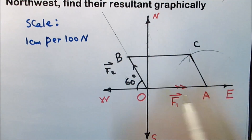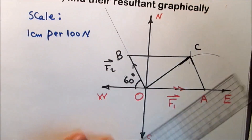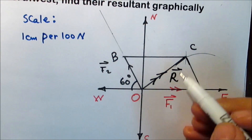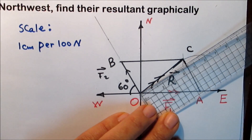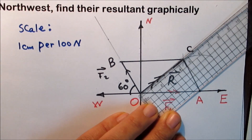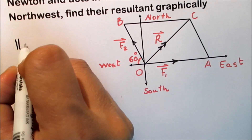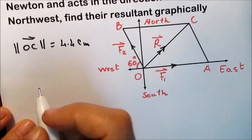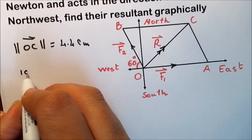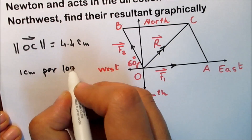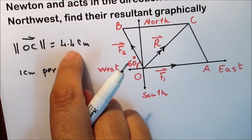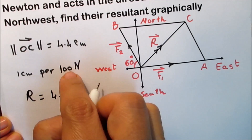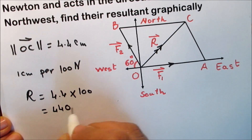Now connect OC to get the diagonal of the parallelogram, which represents the resultant R. To find the magnitude of R, measure the length of the diagonal OC, which is about 4.4 centimeters. Using the drawing scale of 1 centimeter per 100 newtons to convert the length into a force, the resultant R equals 4.4 times 100, giving 440 newtons.